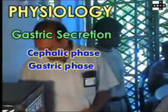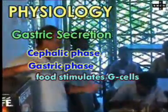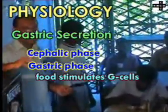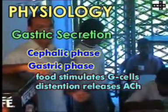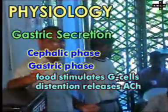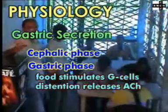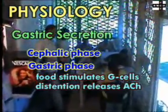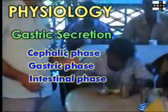In the gastric phase, the chemicals in the food stimulate the G cells to secrete gastrin, which acts on the parietal cells. Distension of the stomach releases acetylcholine, which can act both on the parietal cells as well as the enterochromaffine-like cells of the stomach.